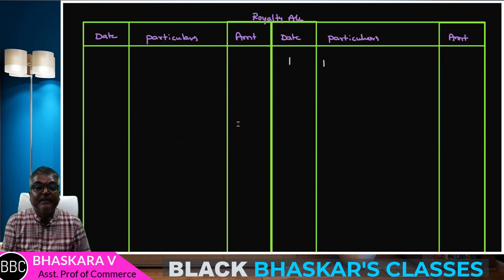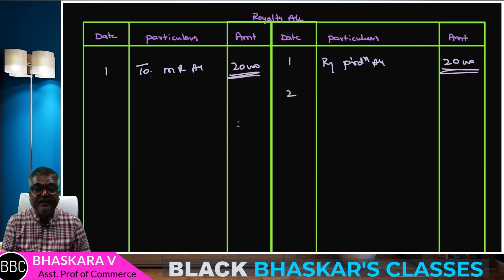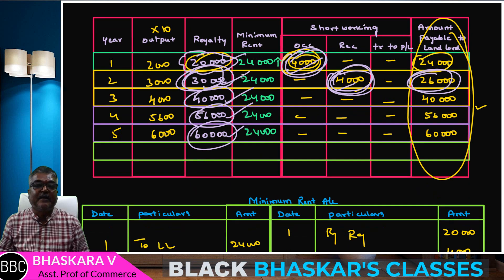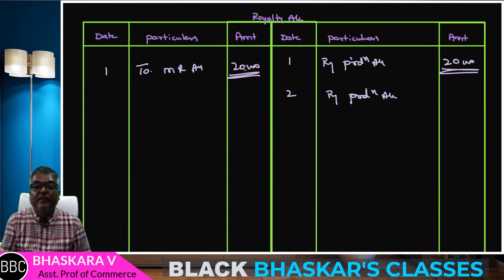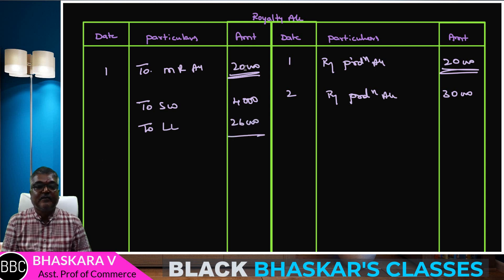1st year: buy production account 24; to minimum rent account 24. Tally. 2nd year: by production account — short working recovery 30, to short working account 4; to landlord account 26. Total: 100.